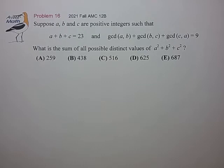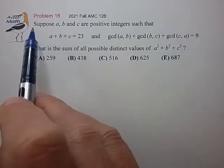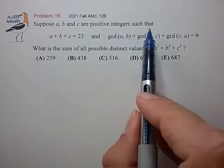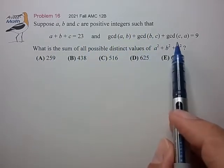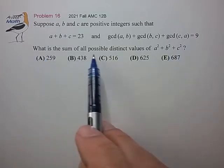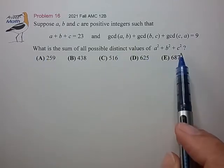Hi, this is problem 16 from the 2021 AMC 12B. Suppose a, b, and c are positive integers such that the sum is 23 and the sum of all GCD pairs is 9. What is the sum of all possible distinct values of the sum of squares?